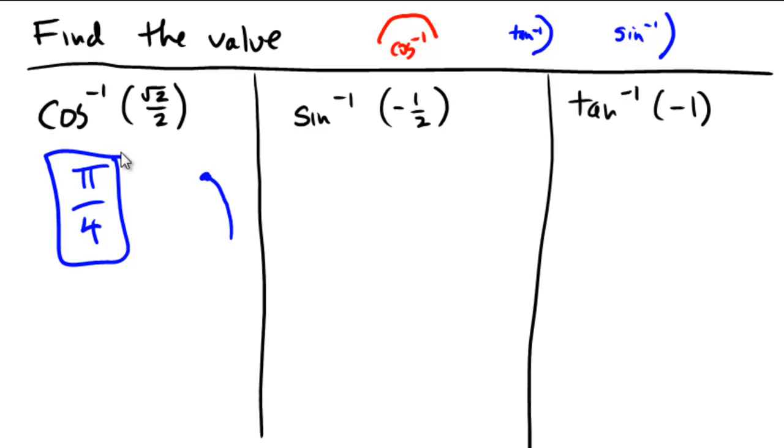Sine inverse of negative 1 half. Negative 1 half sine value is going to be right here, but that's not in the right quadrant. Right here, and that's in the right quadrant.